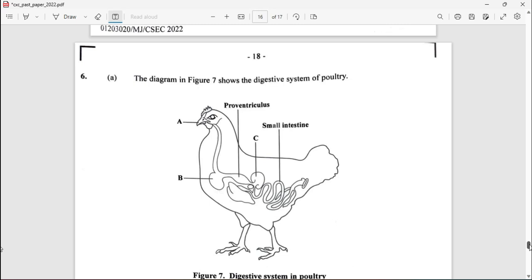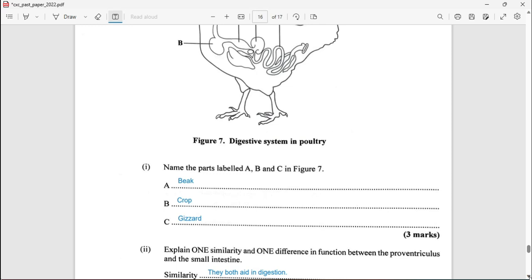What is required: name the part labeled A, B, and C in Figure 7. A of course is the beak, B is the crop, and of course C is the gizzard or proventriculus.